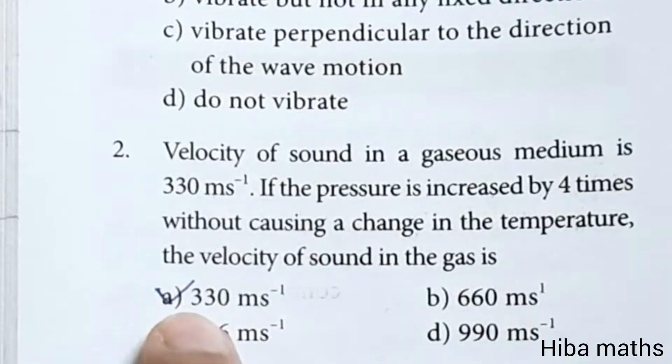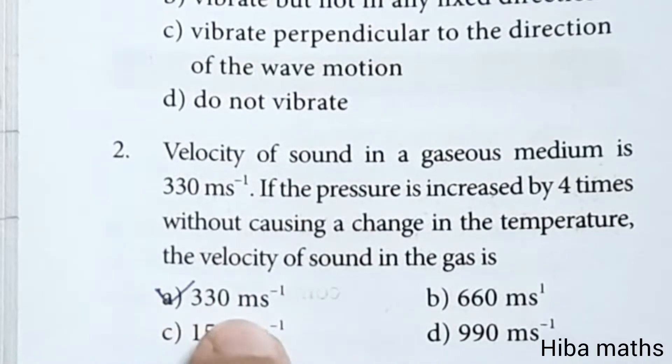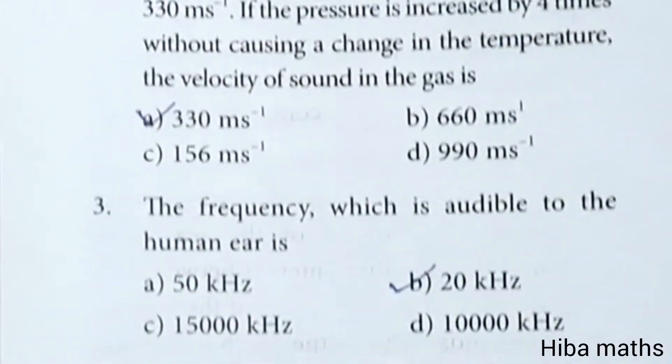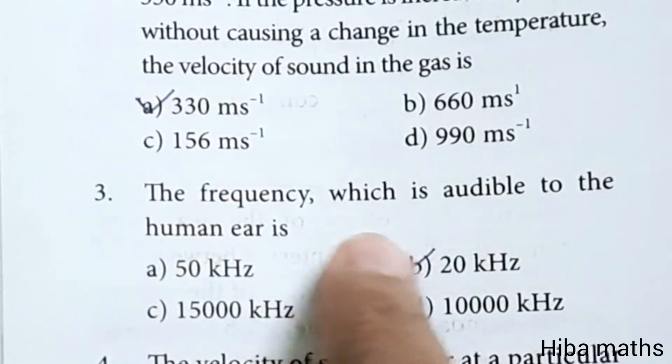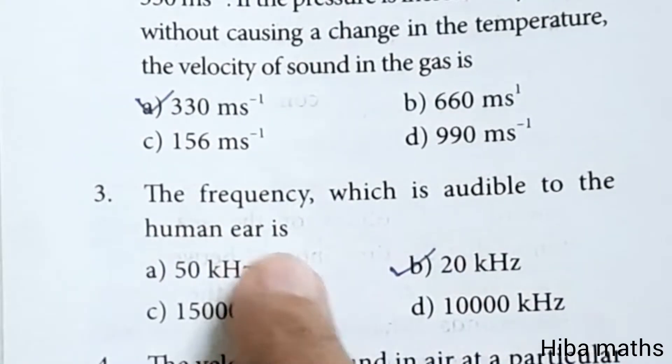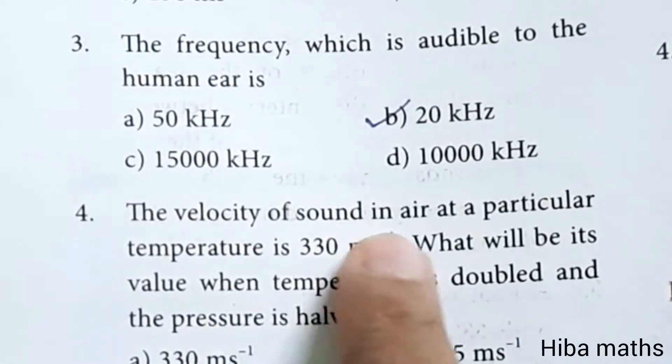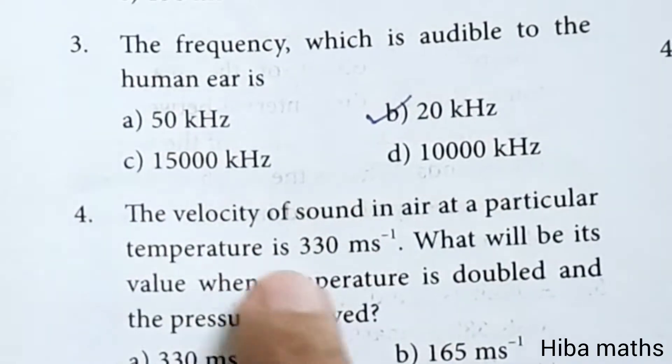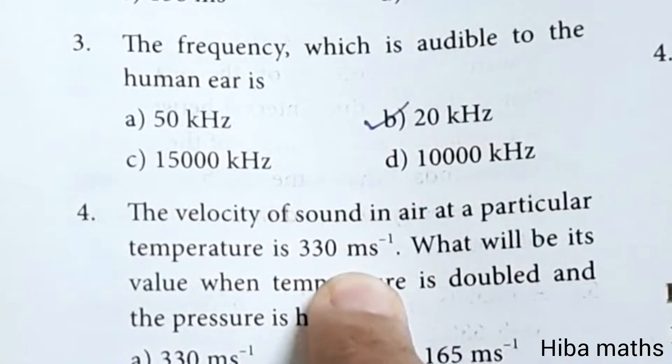Third question: the frequency which is audible to the human ear is 20 kilohertz. Fourth one: the velocity of sound in air at a particular temperature is 330 meter per second.